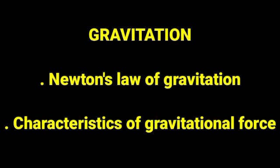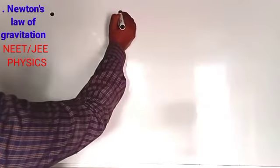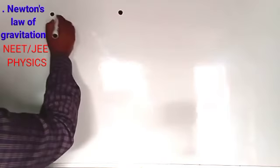Today we will discuss the gravitation chapter — Newton's law of gravitation and characteristics of gravitational force. The magnitude of force between two masses is directly proportional to the product of their masses and inversely proportional to the square of the distance between them, and this force acts along the line joining the two masses. This is Newton's law of gravitation.